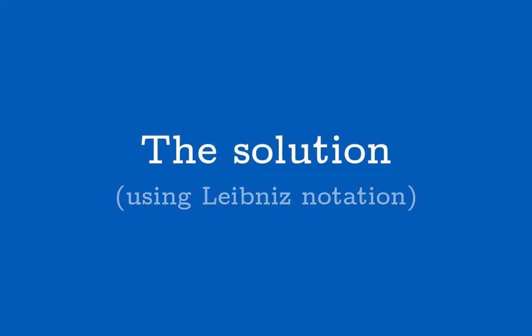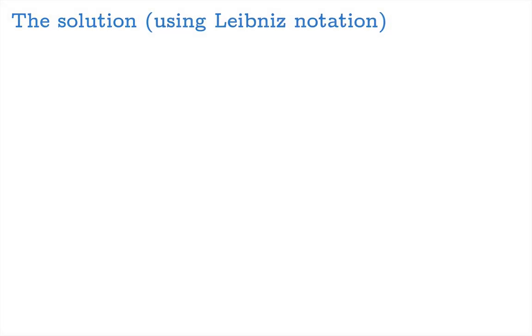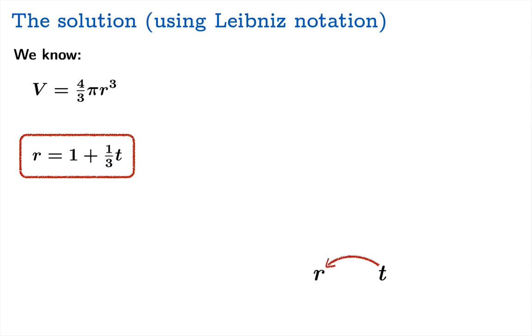So our first solution is going to be using Leibniz notation. So let's collect together what we know. We know that the volume of a sphere is four-thirds pi r cubed, where r is the radius. And we're also told in this problem that r is a function of time explicitly, 1 plus 1 third t. So r is a function of t, and then v is a function of r. So we have a composition.